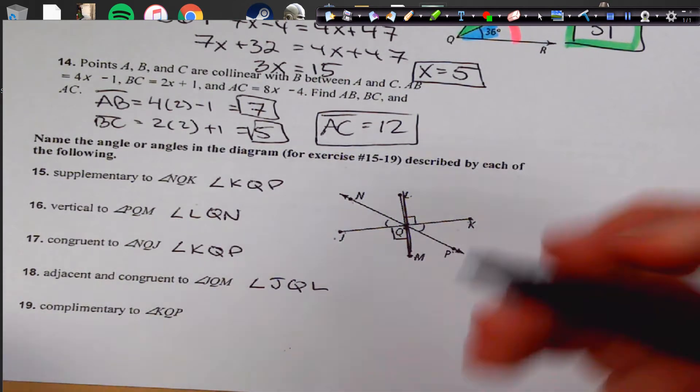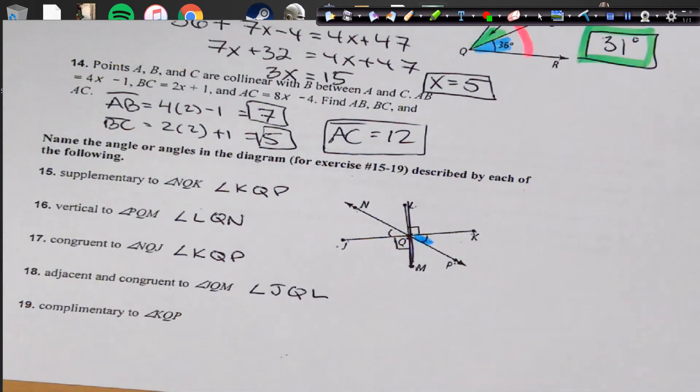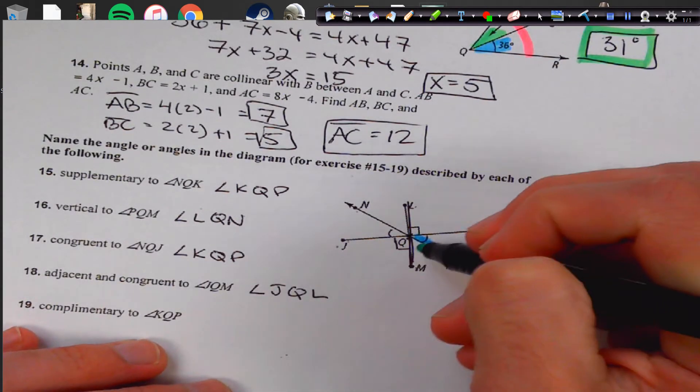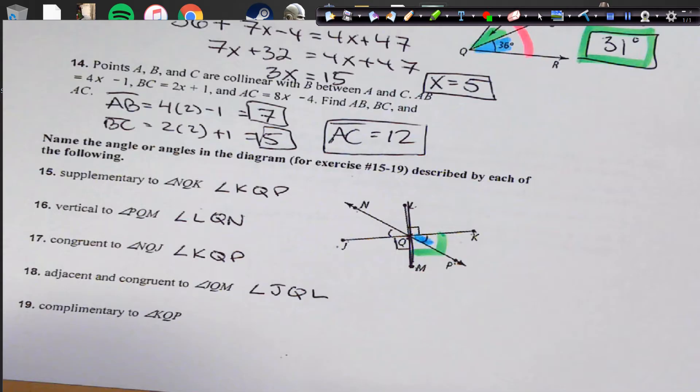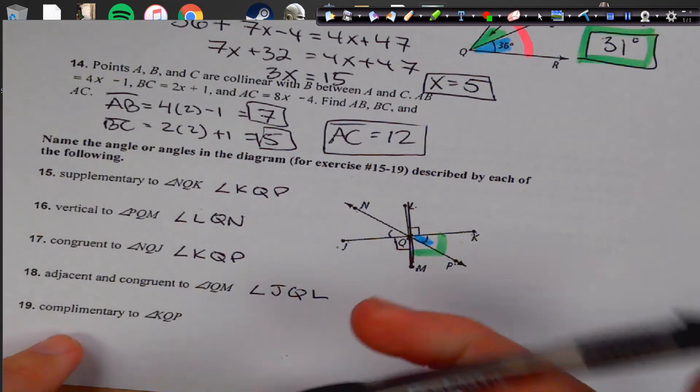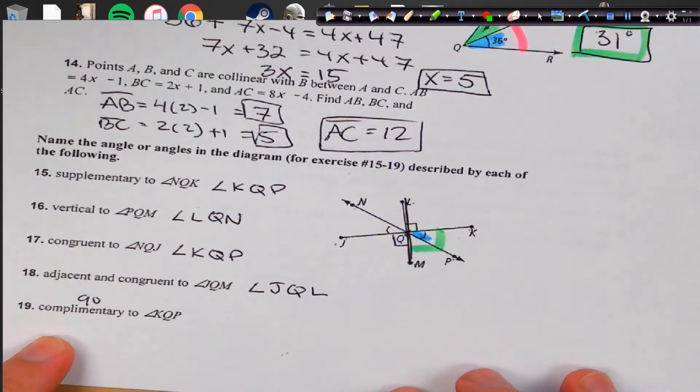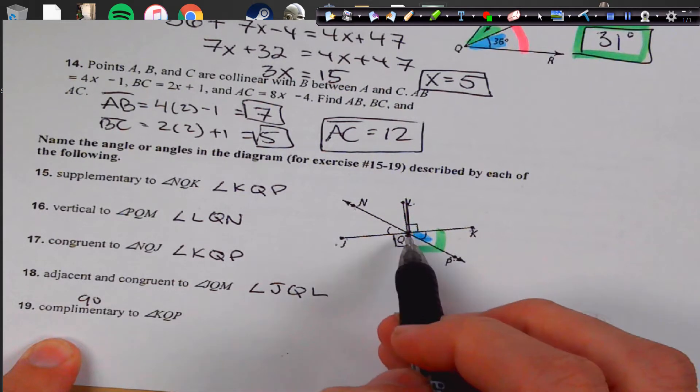Adjacent and congruent to JQM. JQM, what would be adjacent to it and congruent? Well, you see how LM is a straight line. This is 90, so this would be 90 over here. And then JQL would have to also be 90, because they have to add it to 180. And then complementary to KQP. KQP is this angle here. The whole thing, though, has to add up to 90, so this would be a 90 as well. So it's going to be the second piece to make it 90. Complementary means it's going to add up to 90 degrees. So the second angle would be PQM.